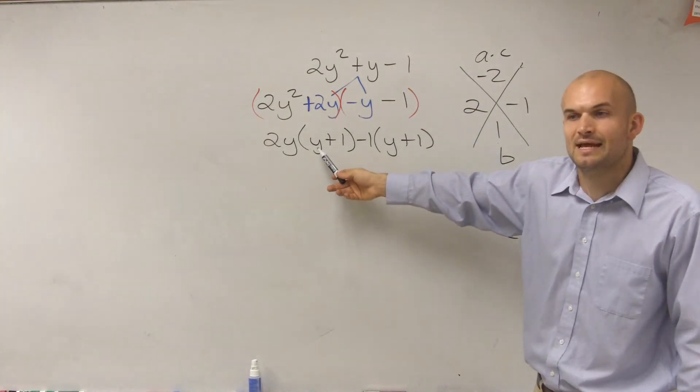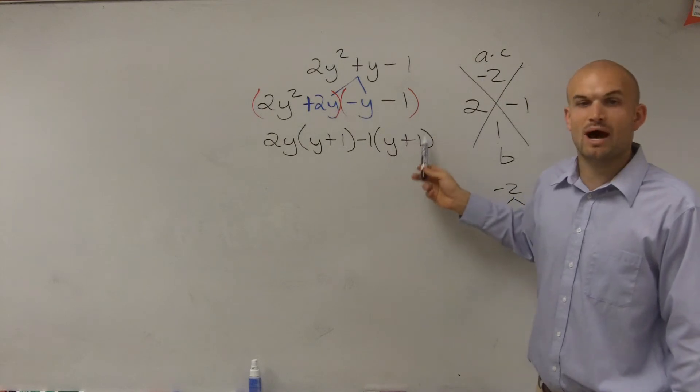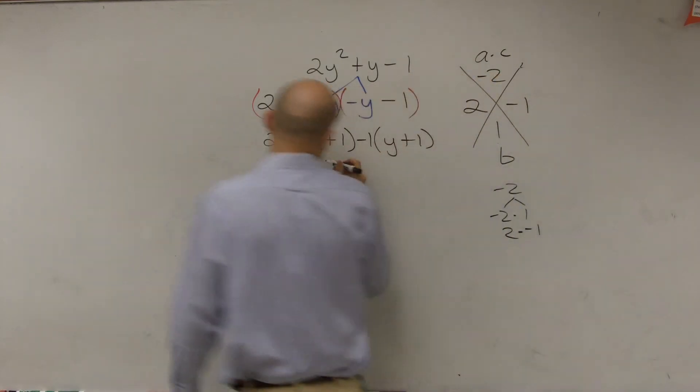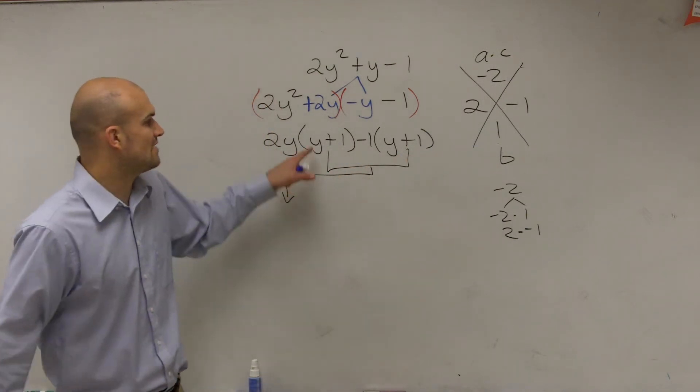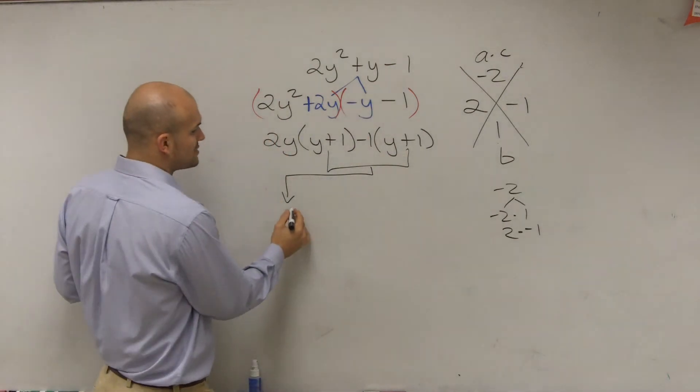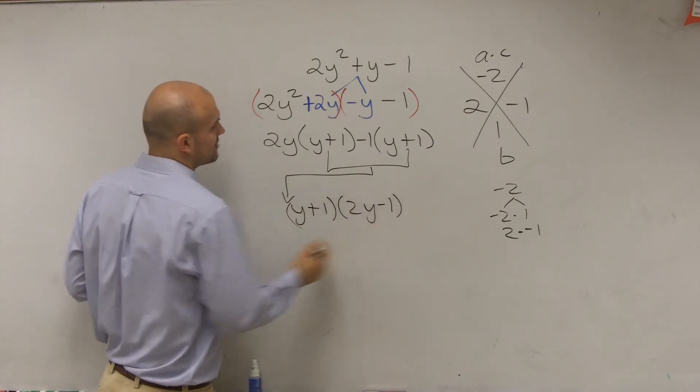Then here, remember, you want to get this to be the same. So if I have negative y minus 1, if I want to get that to be a y plus 1, I'm going to want to factor out a negative 1. Then what you notice is these are going to be exactly the same. So now I notice my GCF is y plus 1. So when I factor out or divide out my GCF, I'm left with y plus 1 times 2y minus 1.